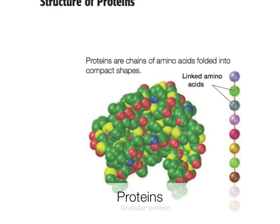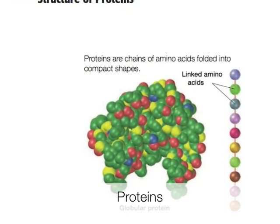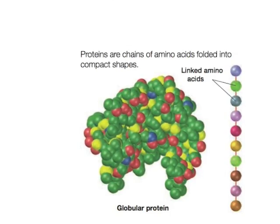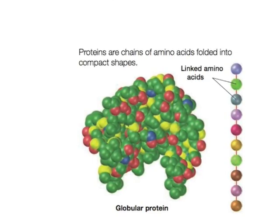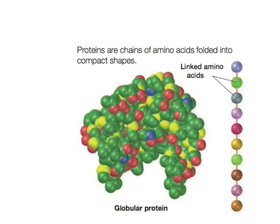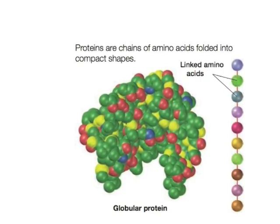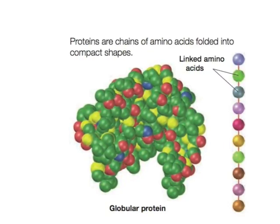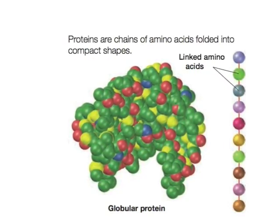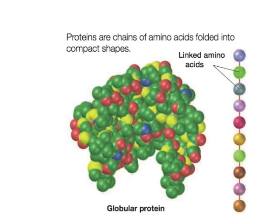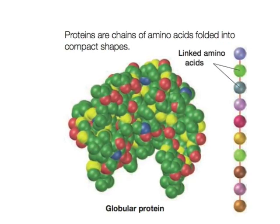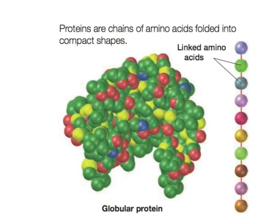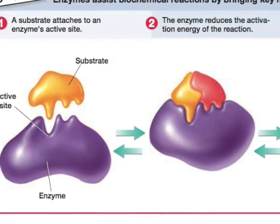The first biomolecule we will discuss are proteins. A protein is a large molecule formed by smaller linked molecules called amino acids. The amino acids react chemically together to form the overall shape of the protein. Proteins are extremely important for the various functions that they provide for the body.